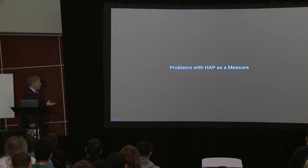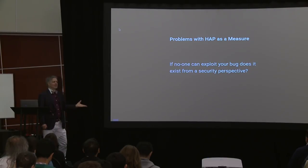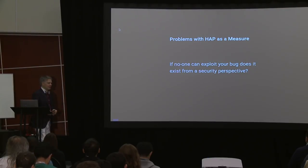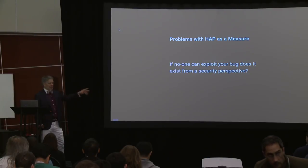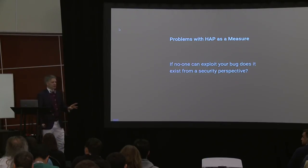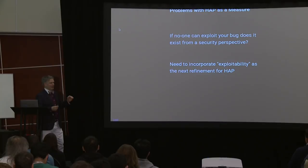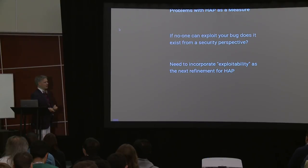The problems with the horizontal attack profile as a measure: if no one can exploit your bug, does it actually exist? The kernel contains many bugs, but not all of them are CVEs — some are not exploitable. Just taking the entire defect profile of the kernel and saying we have X bugs per line of code and therefore our attack vulnerability is lines of code multiplied by X is untrue, because some of those bugs are not exploitable. We need to incorporate exploitability as a measure in this horizontal attack profile.